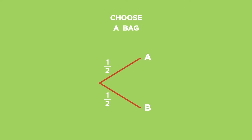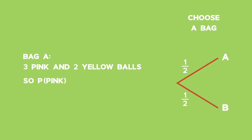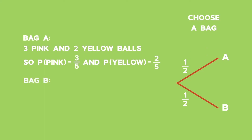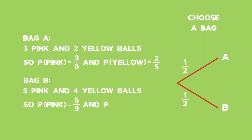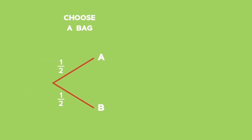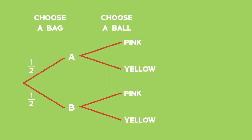Step 2: determine the probabilities of choosing a pink or a yellow ball. In Bag A there are 3 pink and 2 yellow balls, so the probability of choosing a pink ball from Bag A is 3 out of 5, and the probability of choosing a yellow ball from Bag A is 2 out of 5. In Bag B there are 5 pink and 4 yellow balls, so the probability of choosing a pink ball from Bag B is 5 out of 9, and the probability of choosing a yellow ball from Bag B is 4 out of 9. Add in two branches for pink and yellow balls, labeling them 3 fifths, 2 fifths, 5 ninths, and 4 ninths along the branches.